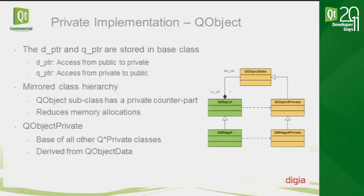Instead of having separate private objects for each public class, QObject mirrors the public API hierarchy on the private side as well — each QObject has a private counterpart. For example, QObject has QObjectPrivate, and QWidget has QWidgetPrivate. The reason for this mirrored hierarchy is to reuse memory allocations. If you think of a UI class like QListWidget, it has a deep inheritance hierarchy of about five to six levels. Without mirroring, there would be up to five or six memory allocations for private objects alone.